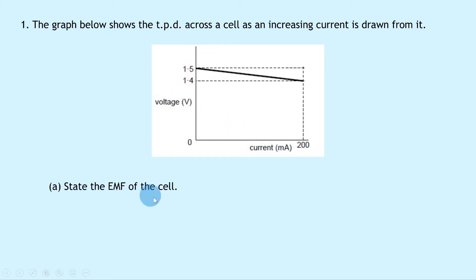Part A says to state the EMF of the cell. Well, you should remember that from a graph we can find the EMF by getting the y-axis intercept. So we can say that EMF is equal to the y-axis intercept, which is equal to 1.5 volts, and we can see that on the graph at this point here.